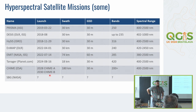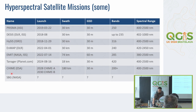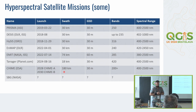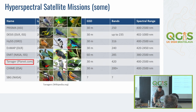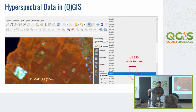In the future there are plans to provide hyperspectral observations covering much more of Earth. For example, the CHIME mission will provide satellite images with a swath covering more than 180 kilometers. So more hyperspectral data can be expected in the future.